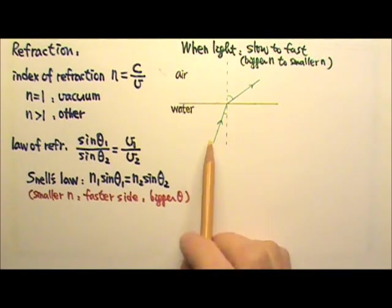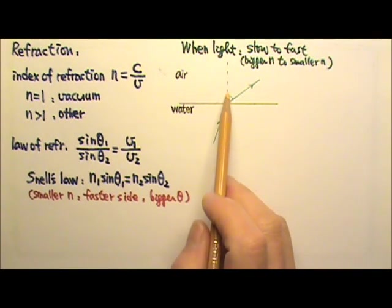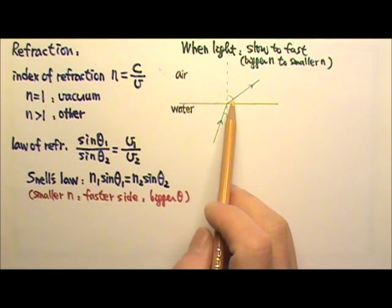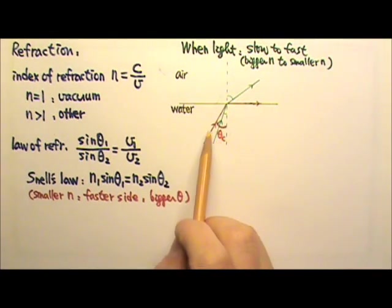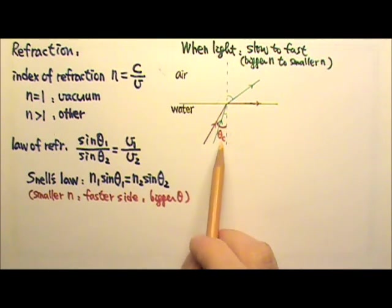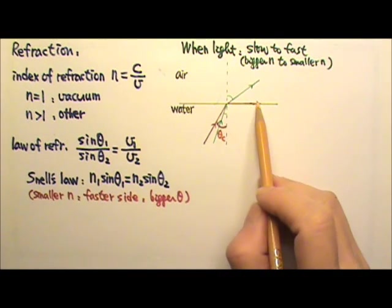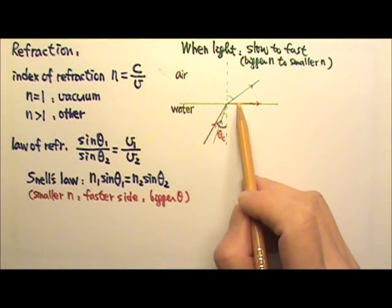And when we increase the angle of incidence, the angle of refraction will also increase. And we can keep increasing the angle of incidence until we get to this angle we call critical angle. The angle of refraction will increase to 90 degrees.